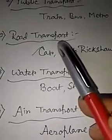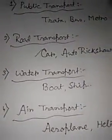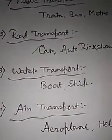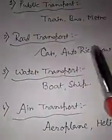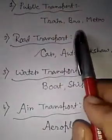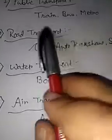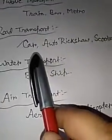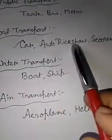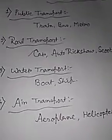Now, where the transport belongs to, we can classify them according to that. First of all, road transport — the transport which you can see on the roads is known as road transport. Some examples are car, auto rickshaw, and scooter.